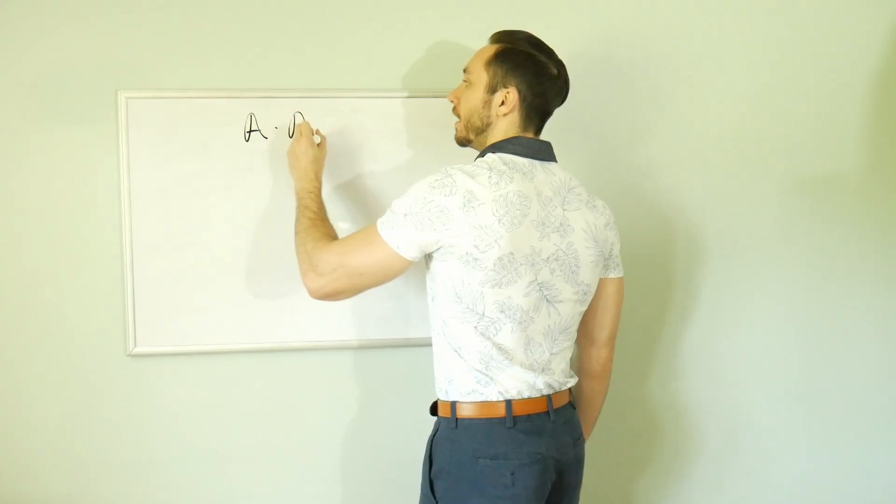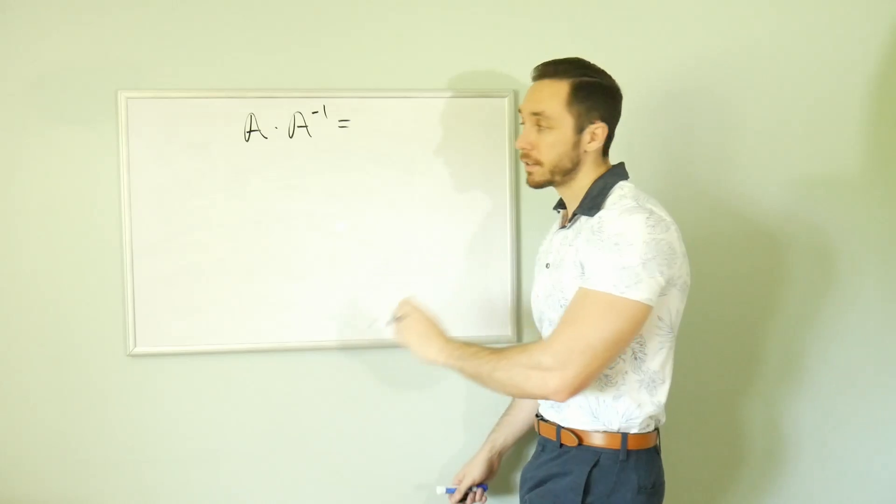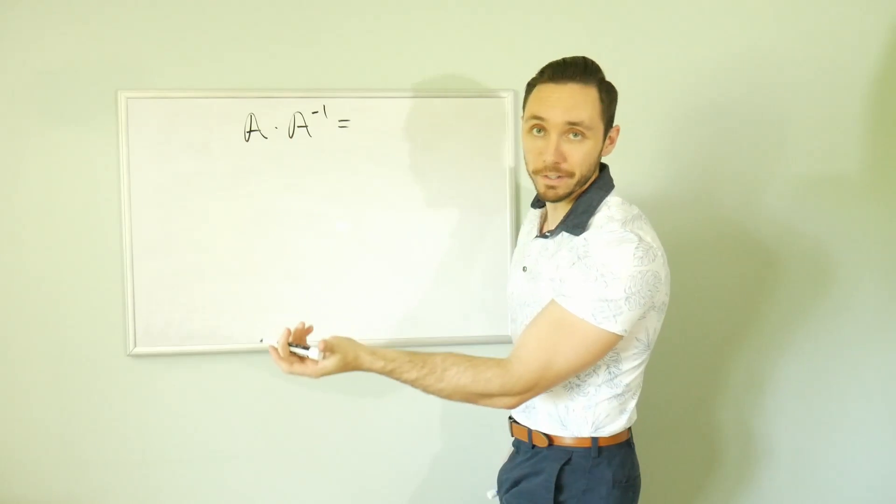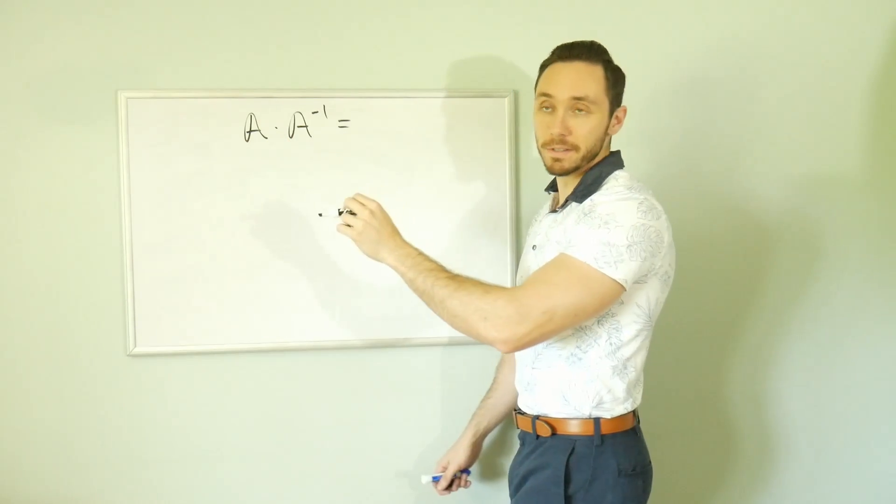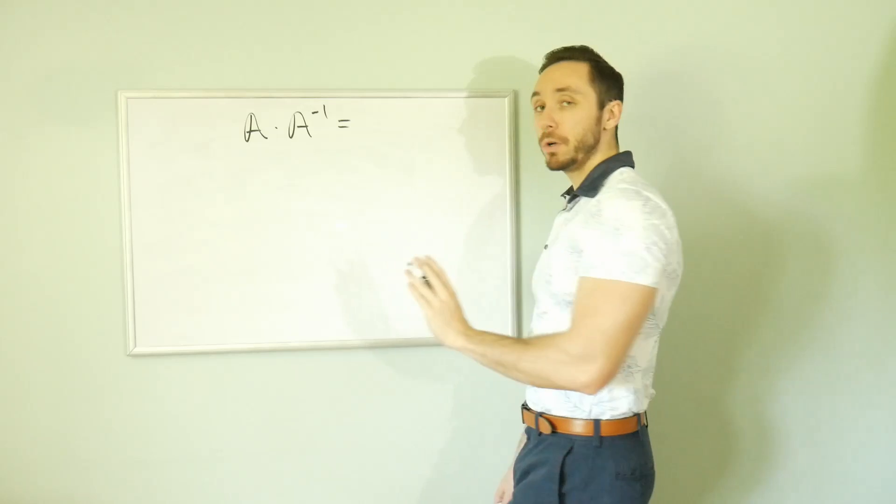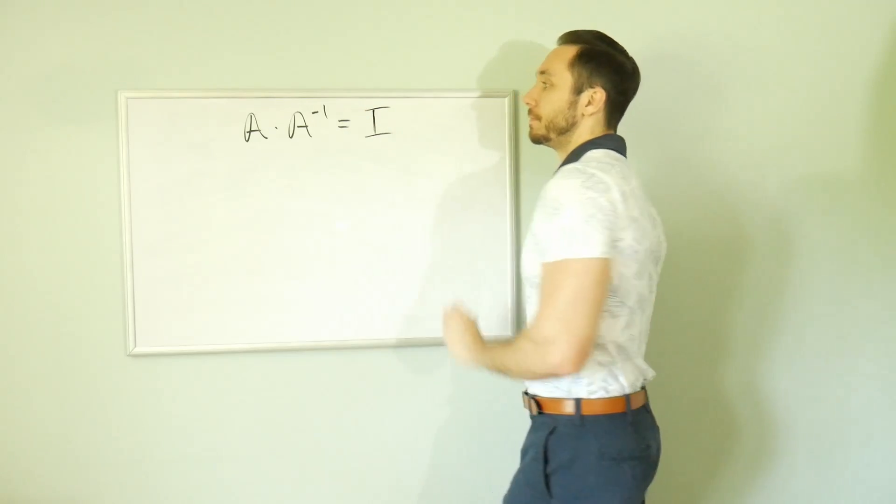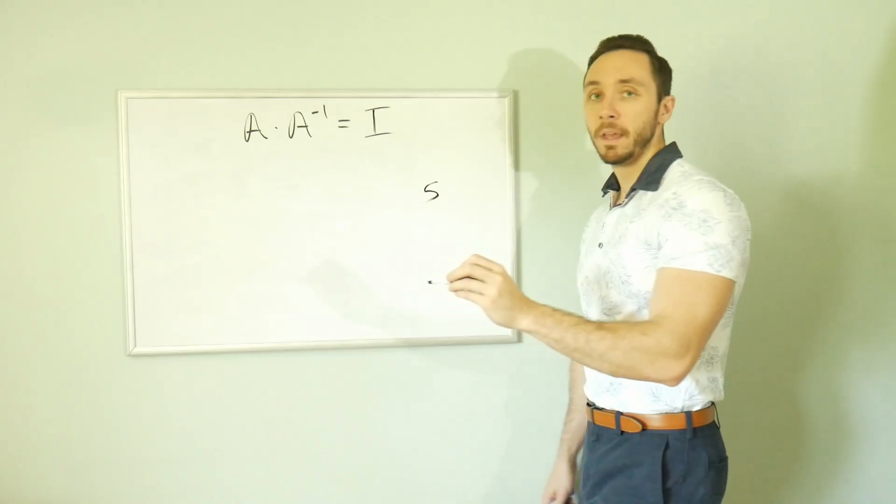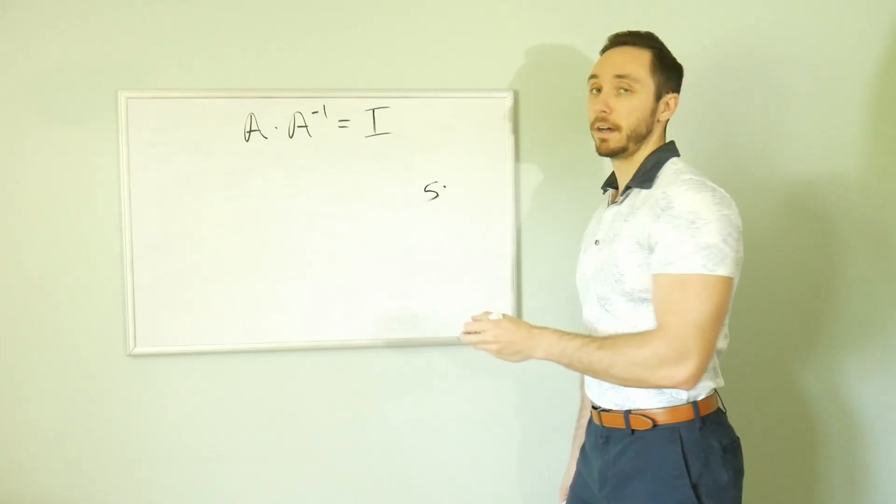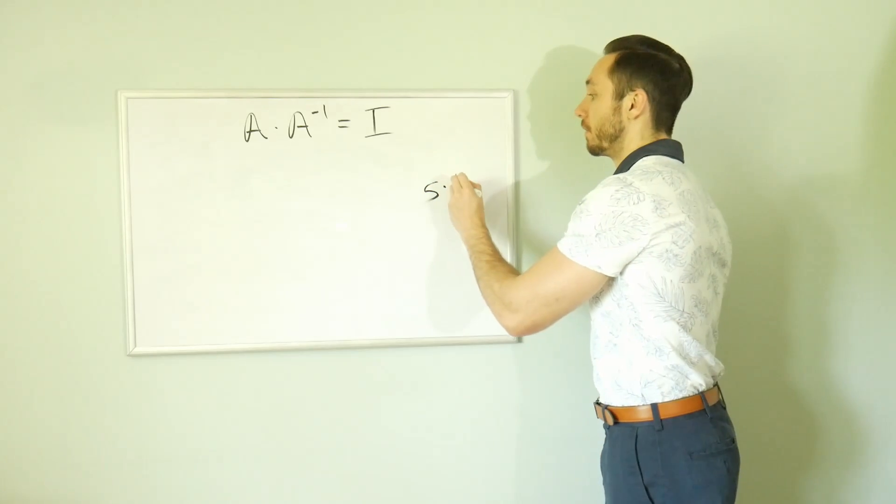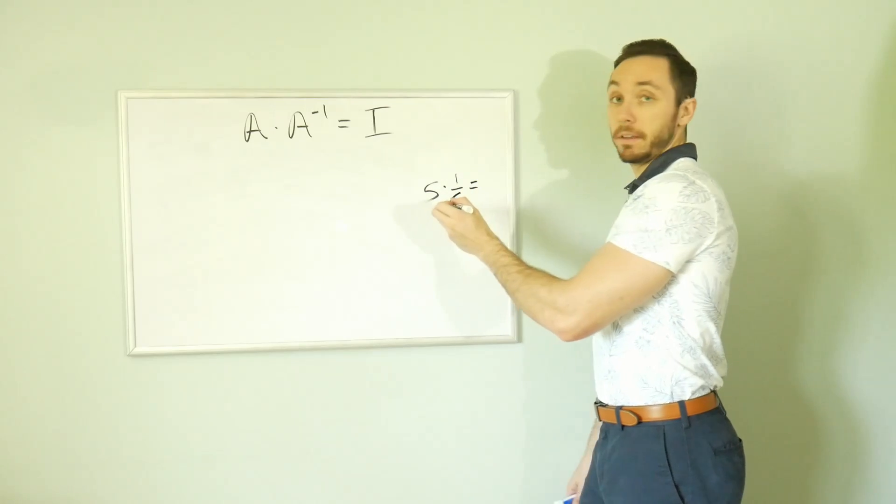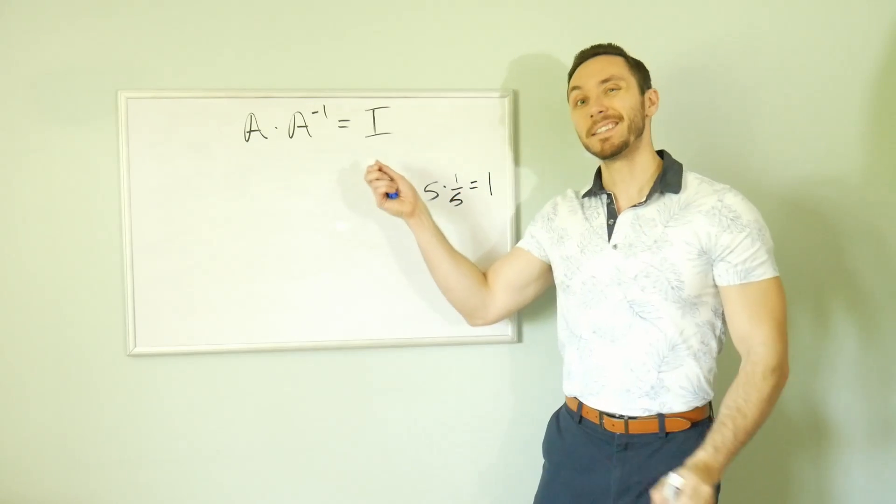Consider taking the product of a matrix A, we're going to call it a two by two, with its inverse A inverse. What we should get when we multiply those two is the identity. So like, let's just say I had number five, and I'm multiplying by its reciprocal, one over five. Here in this case, we get one. That's the identity.